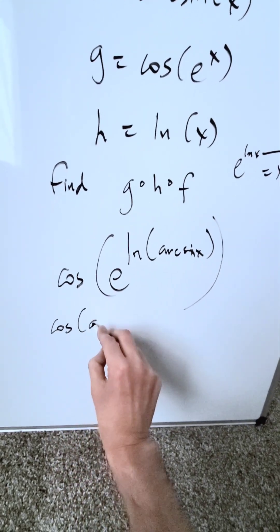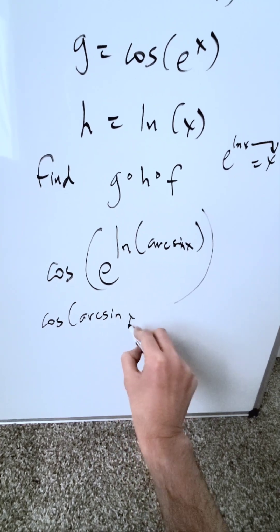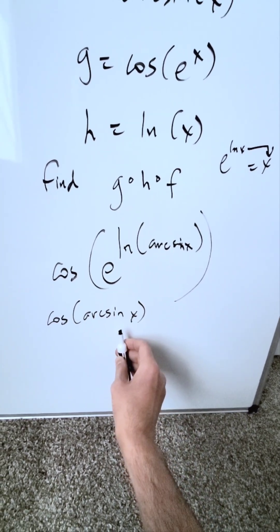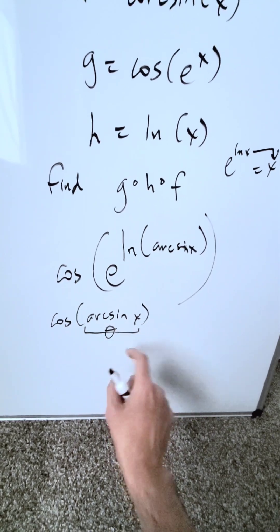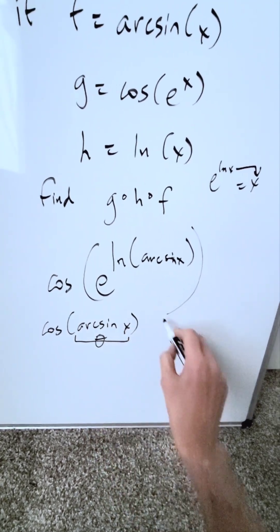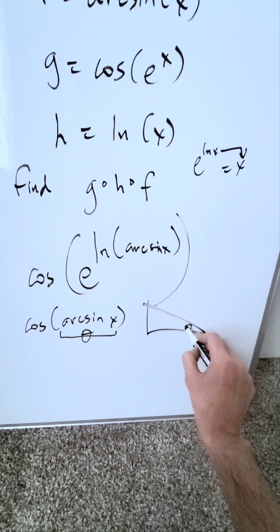It all evaluates to cos(arcsin(x)). You can evaluate this. You're looking at cosine of a certain angle theta. You can use the definition of sine to generate a right triangle with angle theta.